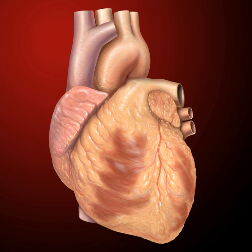The pericardium is the sac that surrounds the heart. The tough outer surface of the pericardium is called the fibrous membrane. This is lined by a double inner membrane called the serous membrane that produces pericardial fluid to lubricate the surface of the heart. The part of the serous membrane attached to the fibrous membrane is called the parietal pericardium, while the part attached to the heart is known as the visceral pericardium. The pericardium is present to lubricate the heart's movement against other structures within the chest, to keep the heart's position stabilized, and to protect the heart from infection.